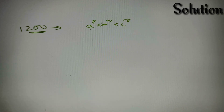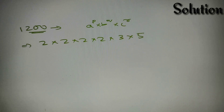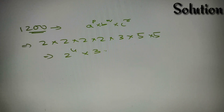We'll write 1200 in the form of its prime factors. 1200 can be written as 2 × 2 × 2 × 2 × 3 × 5 × 5, which is equivalent to 2 raised to power 4, into 3, into 5 squared.